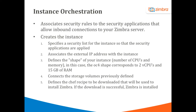In the instance orchestration, we will associate the security rules previously created to the security applications that allow inbound connections to your Zimbra server. Then we'll create the instance, specifying the security list, associating the external IP address, defining the shape — in the example today we're using the OC4 shape, which corresponds to two virtual CPUs and 15 gigabytes of RAM. We will connect the storage volumes and define the Chef recipe that will be downloaded and used to install Zimbra.